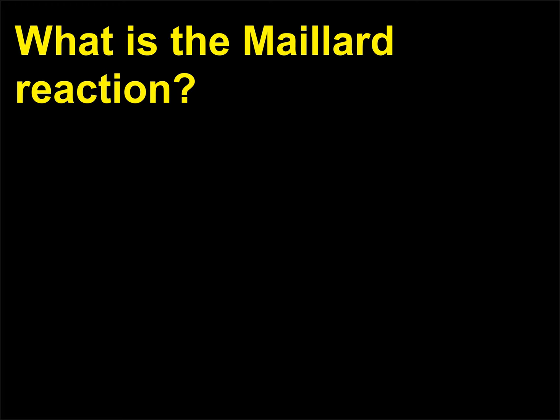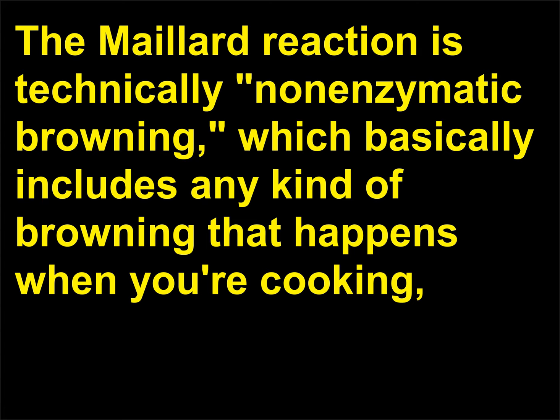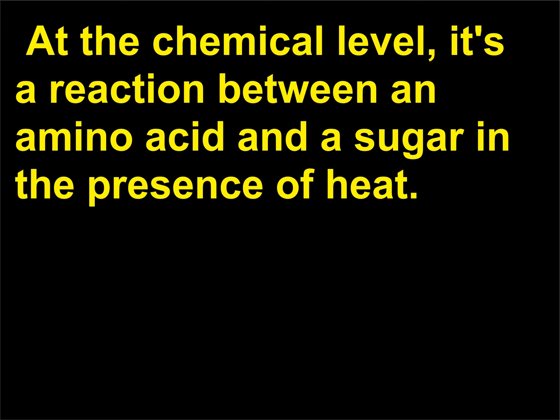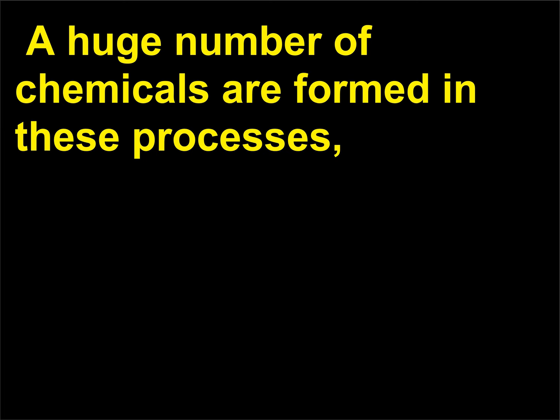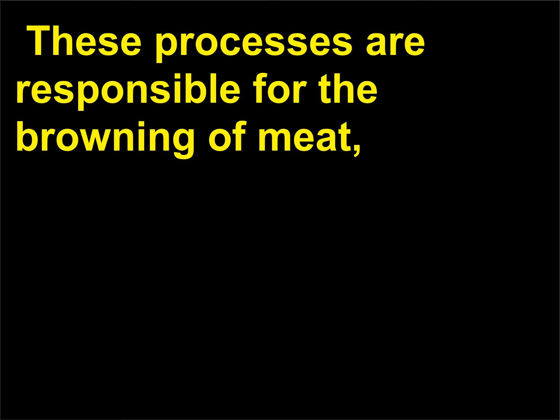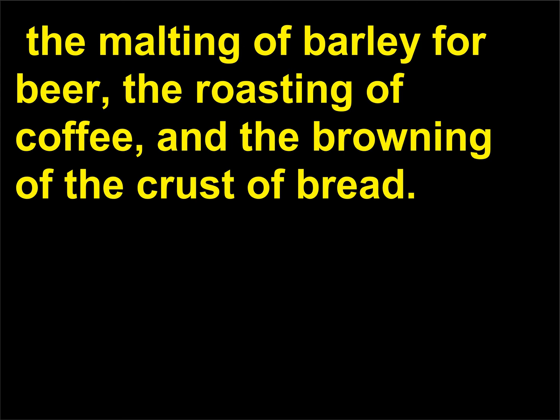What is the Maillard reaction? The Maillard reaction is technically non-enzymatic browning, which basically includes any kind of browning that happens when you're cooking, but excludes what happens to cut apples you leave out on the counter. At the chemical level, it's a reaction between an amino acid and a sugar in the presence of heat. A huge number of chemicals are formed in these processes, so you can't really pin down the Maillard reaction to a single set of chemical steps. These processes are responsible for the browning of meat, the malting of barley for beer, the roasting of coffee, and the browning of the crust of bread.